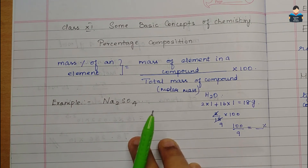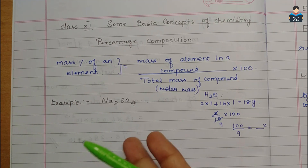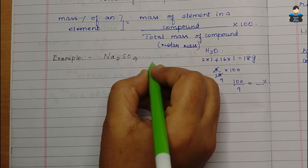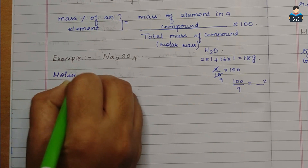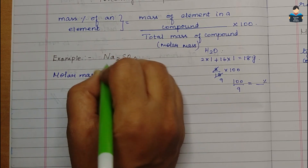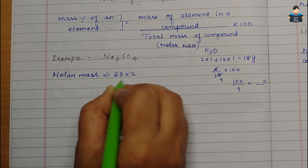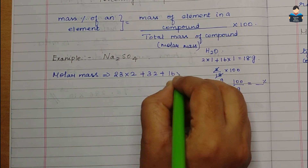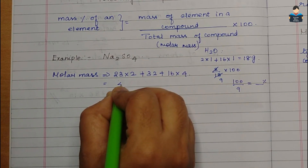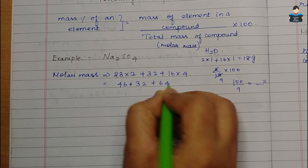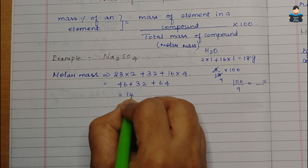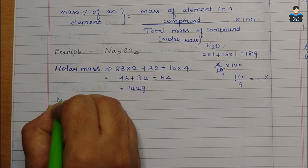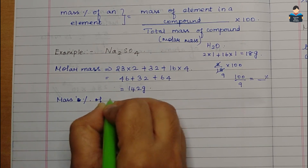Now an example: sodium sulfate (Na₂SO₄). The molar mass is calculated as: 23×2 + 32 + 16×4 = 46 + 32 + 64 = 142 grams per mole. That is the molar mass of sodium sulfate.